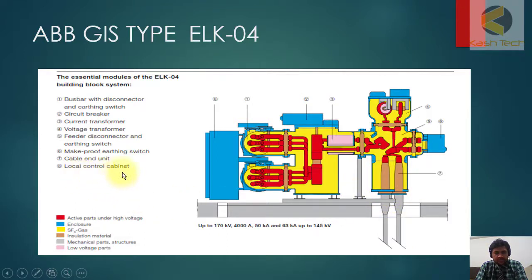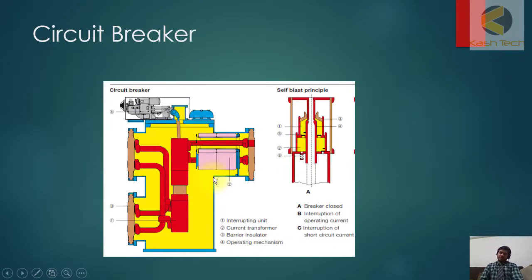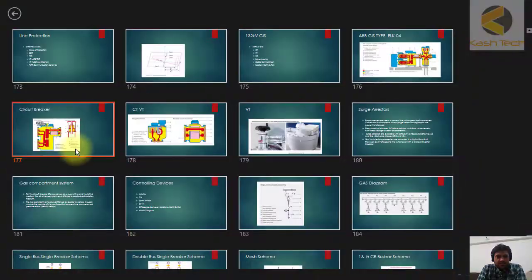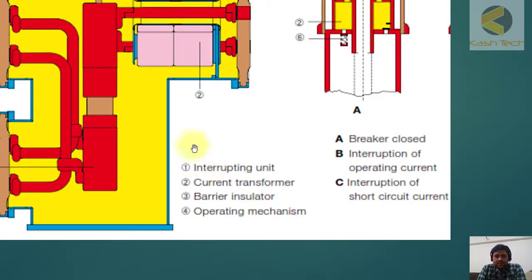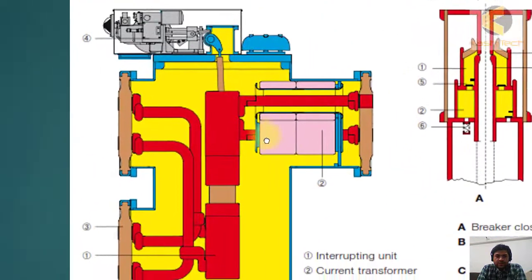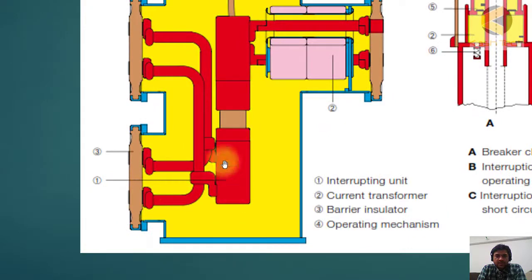The local control cabinet is number eight. All the controls are available here: opening, closing, interlocks, alarms, and indications. This is the cutout of the breaker. Here you can see various parts. Number one is the interrupting unit.